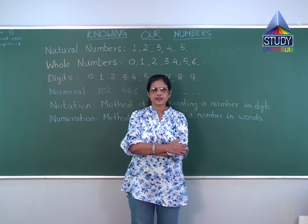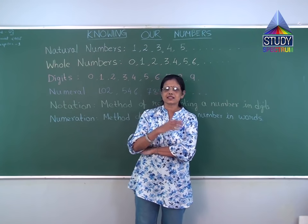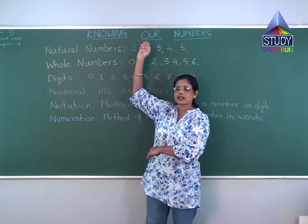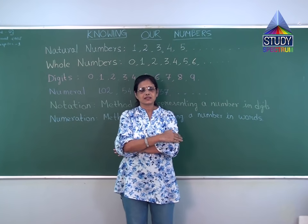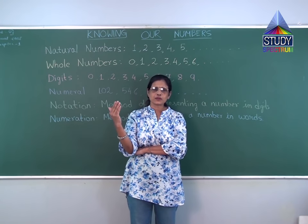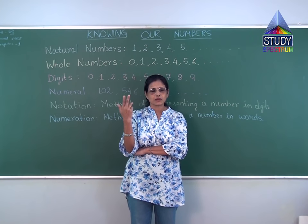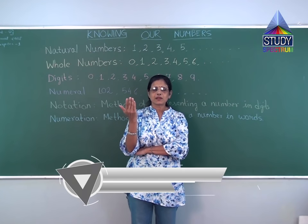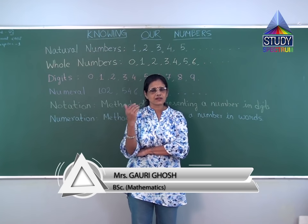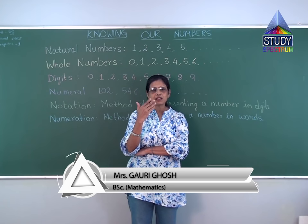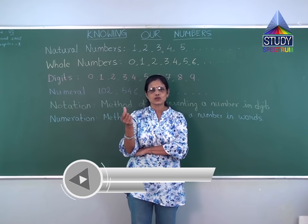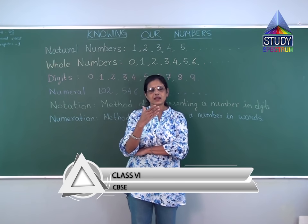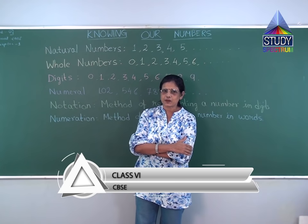I am Gauri Ghosh from Study Spectrum. Today I will cover the sector of knowing our numbers, or number system. There are so many different types of numbers — one digit, two digits, five digits, and many varieties. Sometimes we say lakhs, thousands, hundreds, sometimes we say trillion. We write them in words or digits, and we put commas. We will explain all the different things.